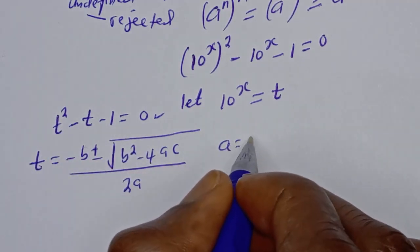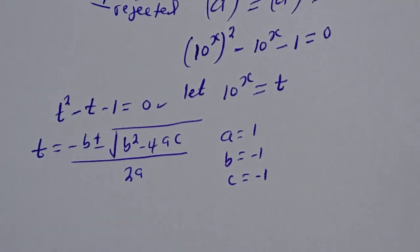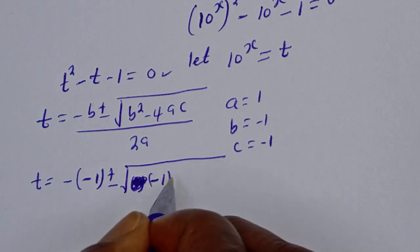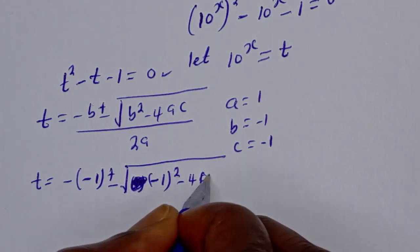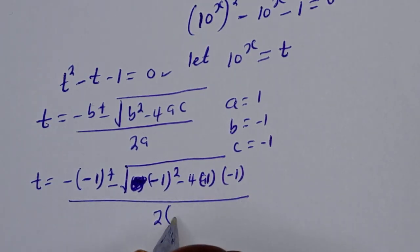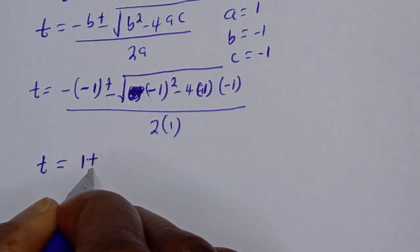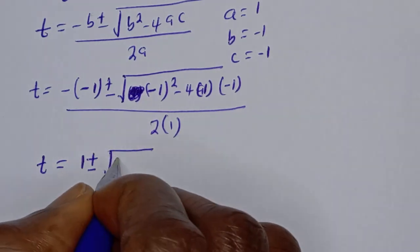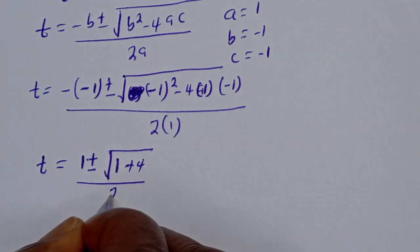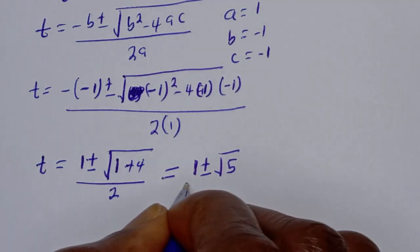From this equation, a is equal to 1, b is equal to minus 1, c is equal to minus 1. Substituting: t equals minus (minus 1) plus or minus square root of (minus 1) squared minus 4 times 1 times (minus 1), over 2 times 1. This simplifies to 1 plus or minus square root of 1 plus 4, over 2, which is 1 plus or minus square root of 5, over 2.